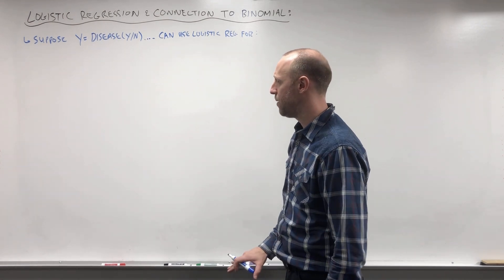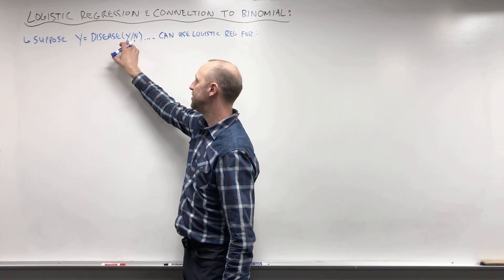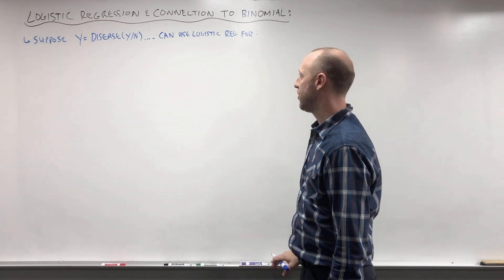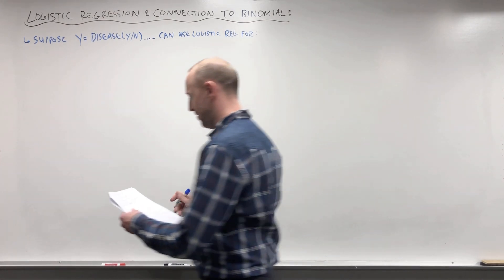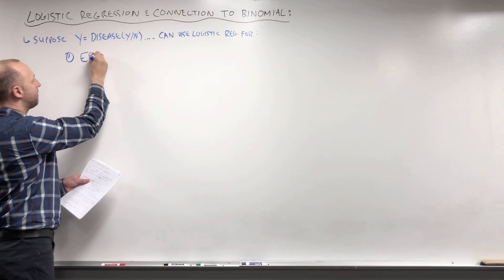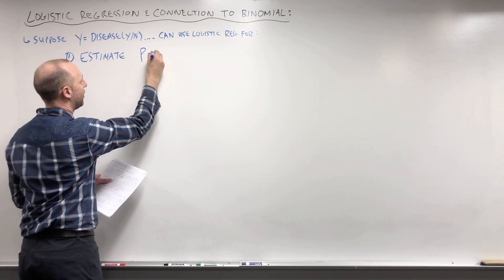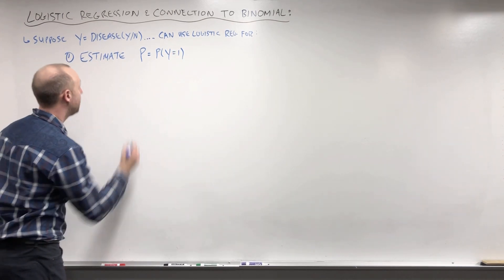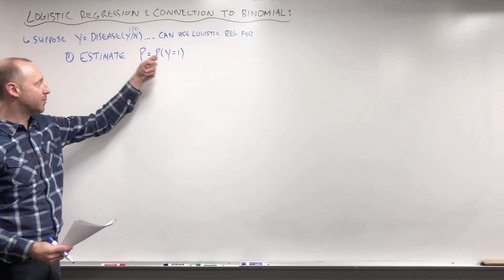As the kind of backdrop for the discussion, suppose that we have a Y or outcome variable of: does someone have a disease, yes or no. So this is a binary yes or no variable, and what we can use logistic regression for — in this context, we can think of two different ways to try and use it. The first one is that we might want to estimate P, the probability that Y equals 1, or the probability that someone has the disease.